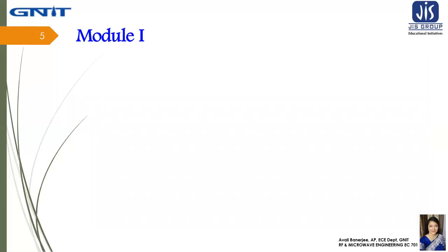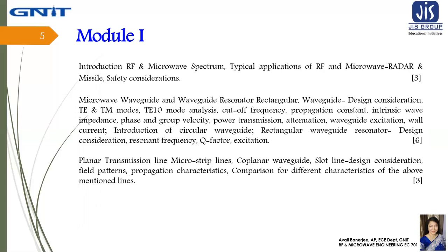The detailed syllabus of the course is divided into four modules. The first module includes the introduction of RF and microwave spectrum, waveguides, and planar transmission lines. The detailed syllabus for Module 1 is given in this slide.